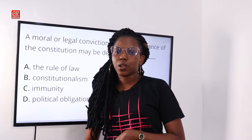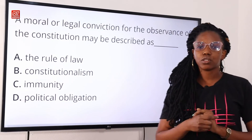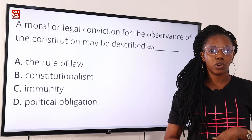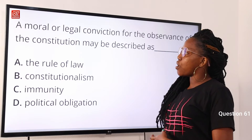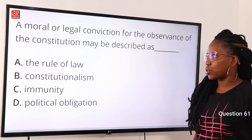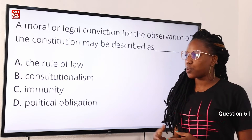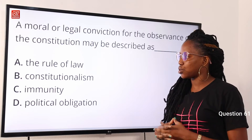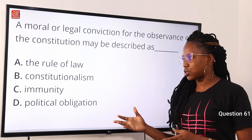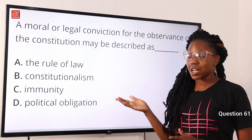Welcome back to my school channel. In this video clip we will be tackling questions 61 to 79. Beginning with question 61: a moral or legal conviction for the observance of the constitution may be described as — option A, the rule of law; option B, constitutionalism; option C, immunity; option D, political obligation. The answer to this question is constitutionalism.